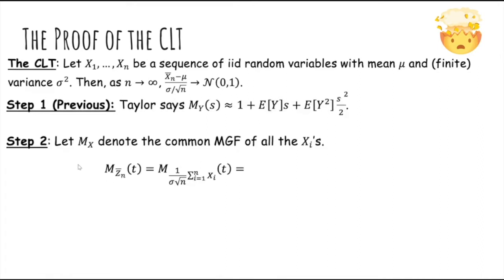Okay, so now let MX denote the common MGF of all the Xi's. They do have the same MGF because the Xi's have the same distribution. So the MGF of the standardized sample mean—let's first plug in our definition, which was 1 over σ√n times the sum of the Xi's.